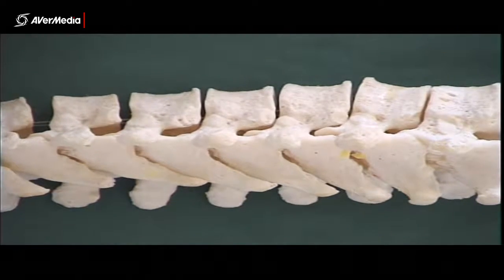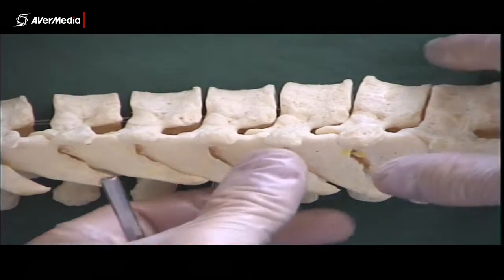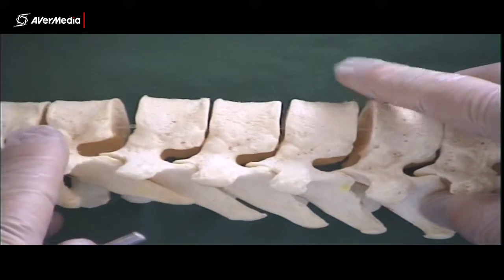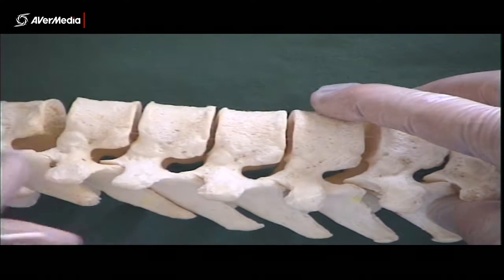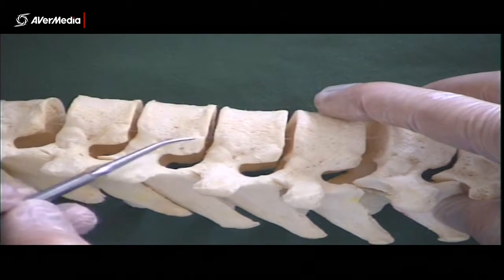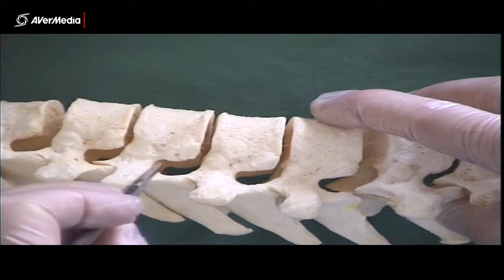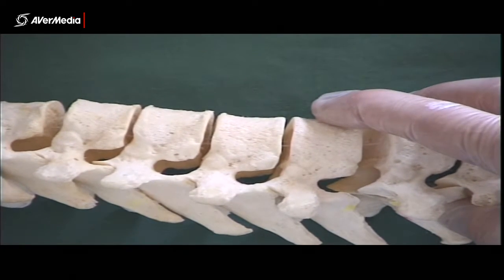So here we're looking at a section of vertebral column with real bones, and here we're in the thoracic region. I just wanted to point out that in between each adjacent pair of vertebrae, what we have is a hole. So this would be an intervertebral foramen.